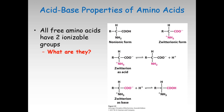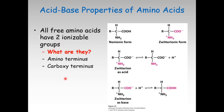The amino and carboxyl groups of amino acids, along with the ionizable R groups of some amino acids, function as weak acids and bases. They have at least two ionizable groups — the amino terminus and carboxy terminus. When an amino acid lacking an ionizable R group is dissolved in water at neutral pH, it exists in solution as a dipolar ion or zwitterion.